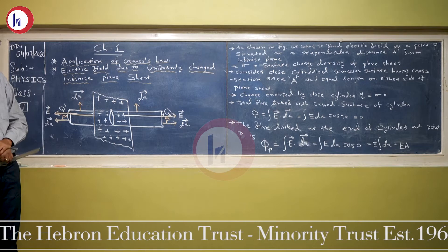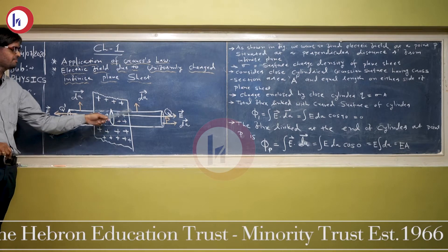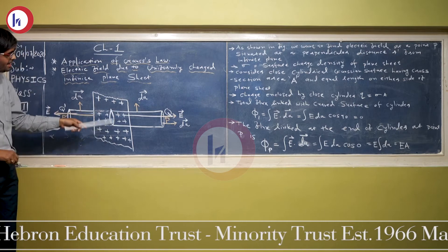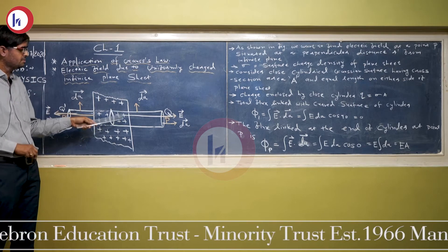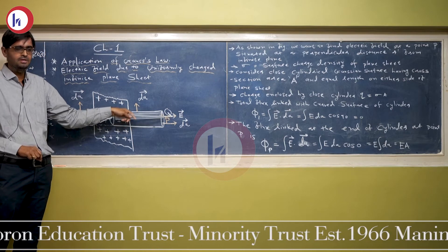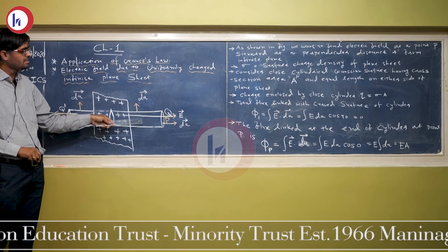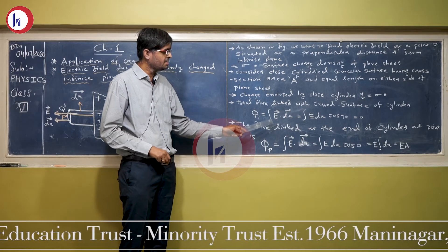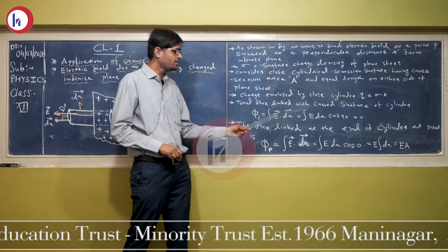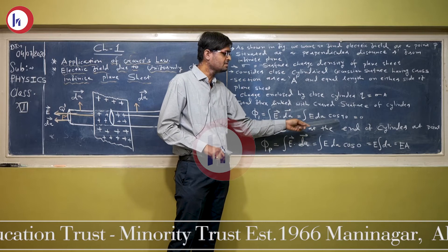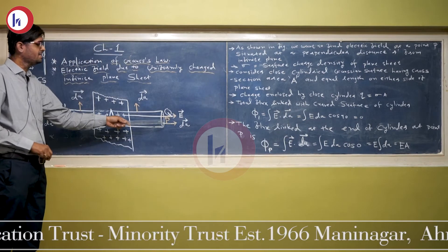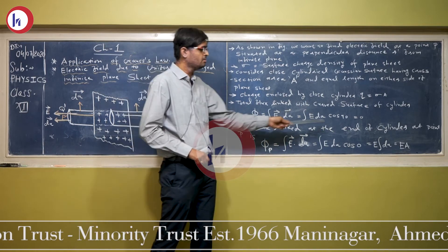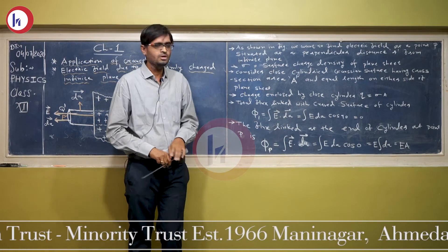Now we find the flux linked with the curved surface. For the curved surface, the area vector is in the upper direction while the electric field produced by the plane sheet is perpendicular to it — the angle between the electric field and the area vector is 90 degrees. So phi 1 equals the integral of E dot dA, which is E dA cos 90, and since cos 90 is 0, the flux phi 1 through the curved surface equals 0.